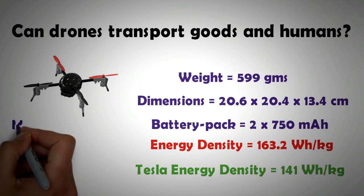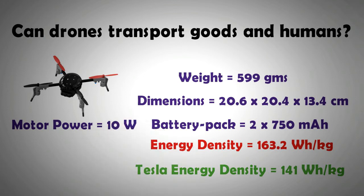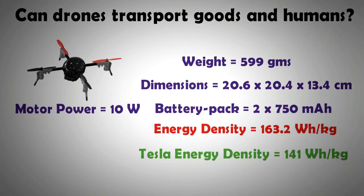The four motors on the drone are rated at 10 watts and consume the total energy in the battery pack in just about 8 minutes or 480 seconds. It should be noted that the battery pack is simply an assembly of two batteries without any cooling or charge-balancing system — features of large battery packs — and therefore has a comparatively higher energy density. Scaling up would mean a lower energy density of the battery pack.